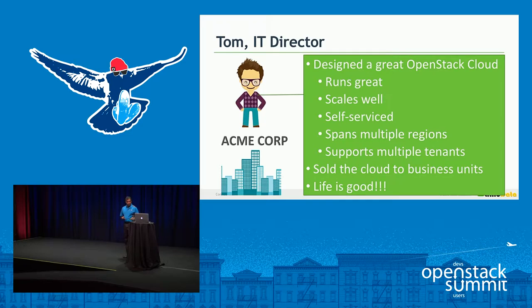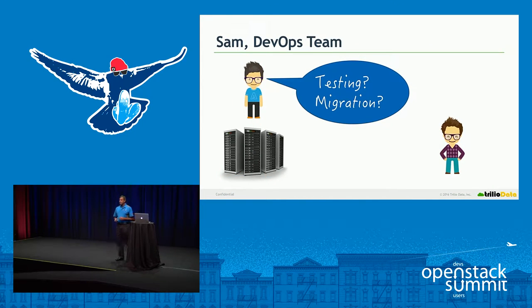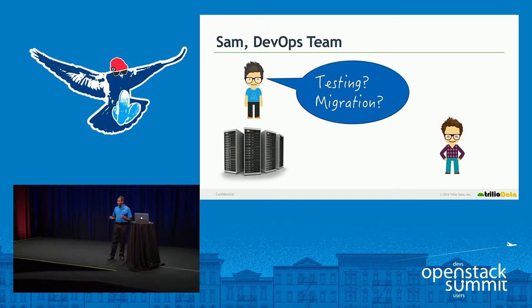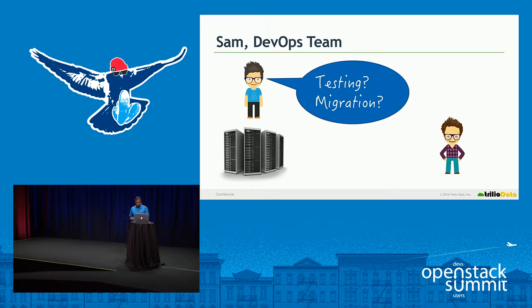Let's take a look at Sam. Sam is the DevOps engineer. He wants to make sure that all the applications are running well and performing well. If something goes wrong with the production, he should be able to troubleshoot without causing any outage, without bringing down any of the applications. His need is: can I take a backup of production and spin that production backup into a different availability zone or onto a different network without interfering with production?